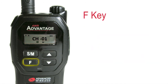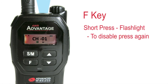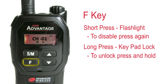The F key is the flashlight button. A short press will turn the flashlight on; to turn off, simply press the F button again. A long press will activate the keypad lock, which disables other buttons so they're not accidentally pressed. To unlock, press and hold the F button.